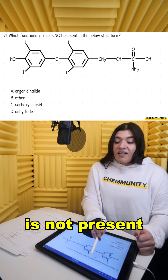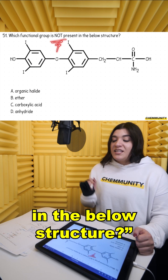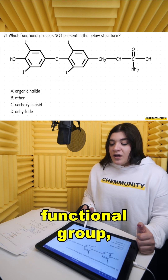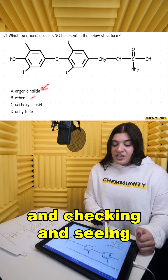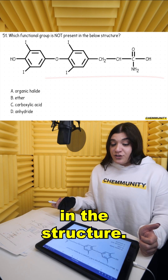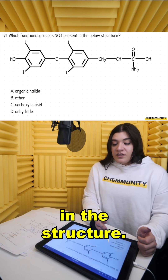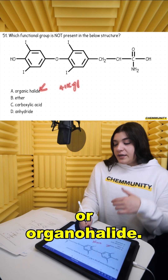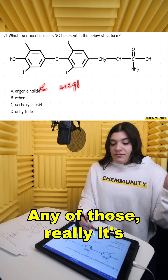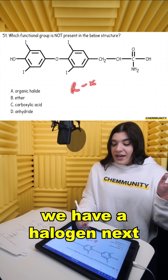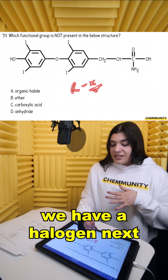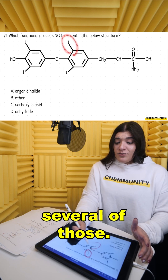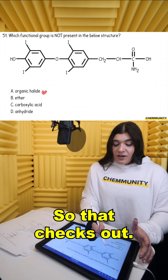Which functional group is not present in the below structure? Instead of identifying every single functional group, I recommend just going down the list and checking to see if it actually is in the structure. So an organic halide, or alkyl halide, or organohalide — really it's just saying we have a halogen next to our group. Do we have that? Yes, we have several of those. So that checks out, that is present.